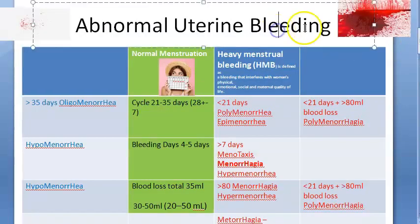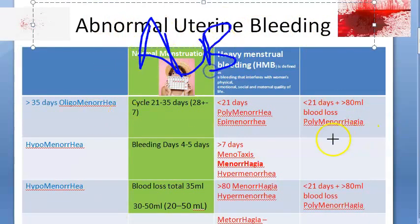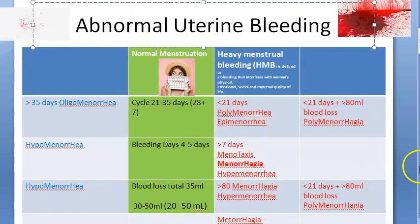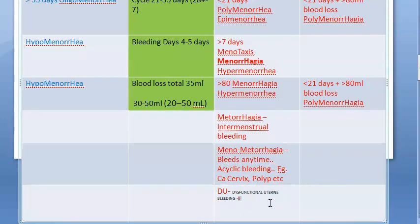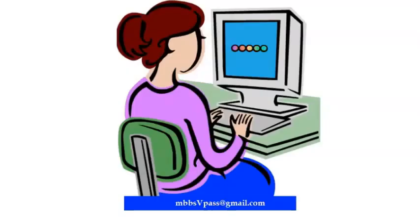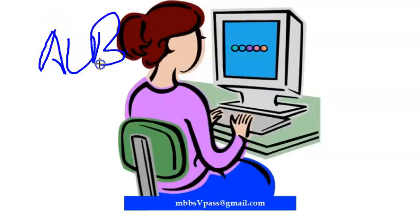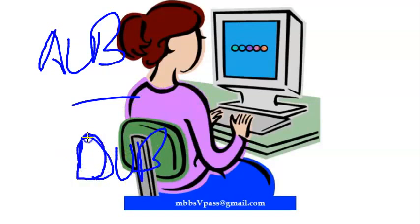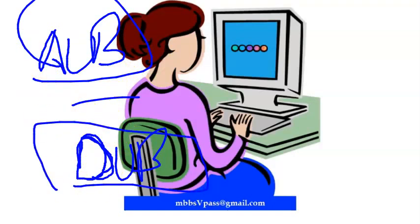All of this comes under abnormal uterine bleeding, also called AUB. Under AUB there is also a term called DUB — dysfunctional uterine bleeding. DUB is a state of abnormal uterine bleeding where you exclude all the known causes of AUB; whatever remains is called dysfunctional uterine bleeding.